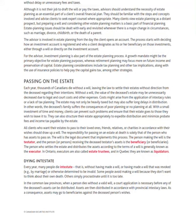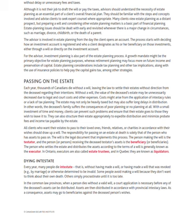Dying Intestate. Every year, many people die intestate — that is, without having made a will, or having made a will that was revoked by marriage or otherwise determined to be invalid. Some people avoid making a will because they don't want to think about their own deaths; others simply procrastinate until it is too late. In the common law provinces, when a person dies without a valid will, a court application is necessary before any of the deceased's assets can be distributed. Assets are then distributed in accordance with provincial intestacy laws, and as a consequence, assets may go to beneficiaries against the deceased person's wishes.